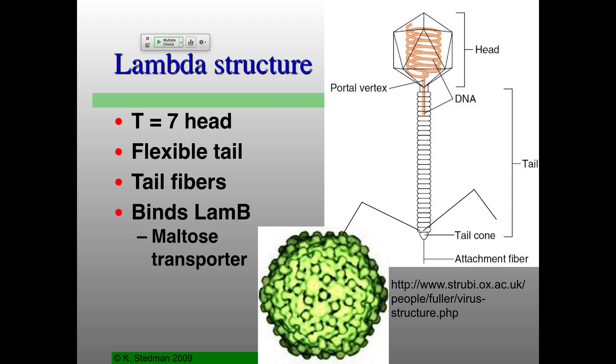Just like all viruses, lambda has a receptor. The particular receptor for lambda is called LamB because it was originally discovered as the lambda-binding protein — when you mutate it, lambda can't bind. It's normally involved in transporting maltose through the membrane. This means you have to put maltose in your growth media, because if E. coli don't have maltose they won't make the maltose transporter, and without the maltose transporter your E. coli can't get infected by lambda.